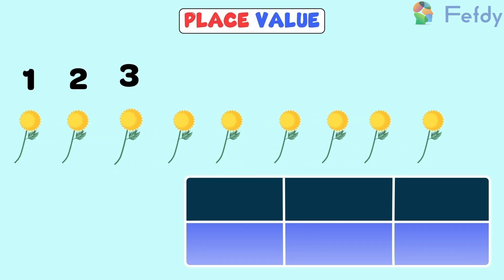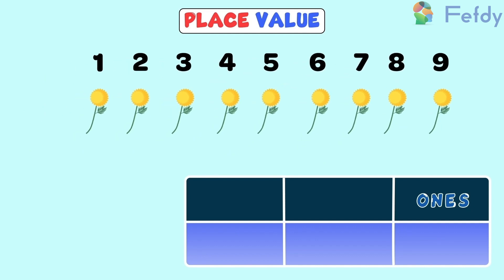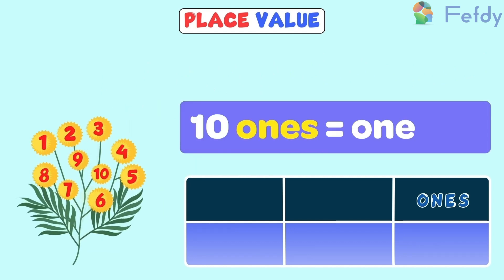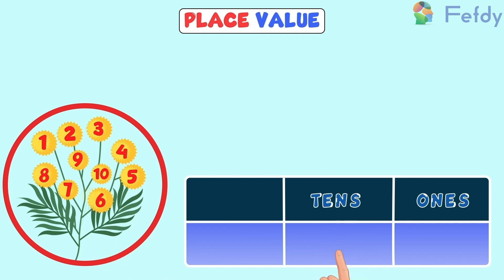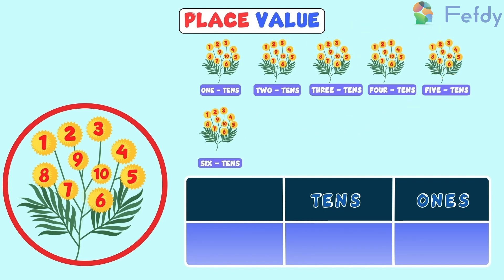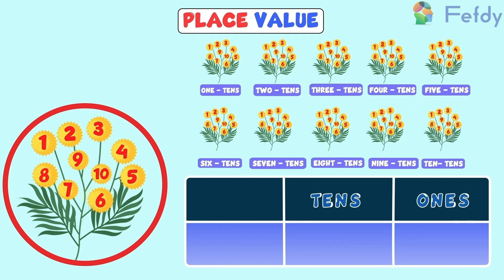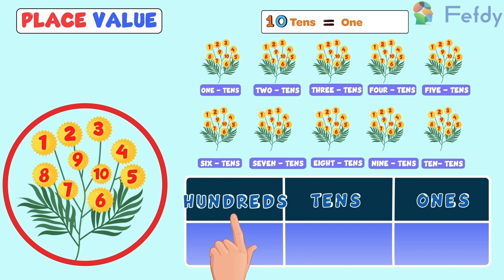One, two, three, four, five, six, seven, eight, nine. Nine flowers means nine ones. Now, if there's another Achillea flower, it becomes ten flowers. This means ten ones make one ten. Now we have two tens, three tens, four tens, five tens, six tens, seven tens, eight tens, nine tens and ten tens. Ten tens make one hundred.